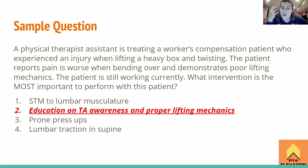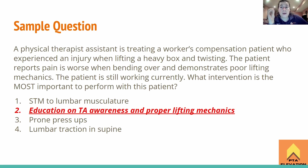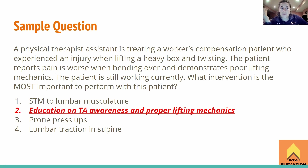Number four — lumbar traction in supine — remember with disc herniations, patients prefer prone. Tractioning them in supine would probably aggravate their symptoms. Supine lumbar traction is appropriate for spinal stenosis, not for a disc herniation patient. So number four is definitely wrong. Number one might help, number three we probably want to do, but our number one priority is to avoid this problem happening again. On the boards, patient education often ends up being the correct answer because we want to make sure patients are aware.